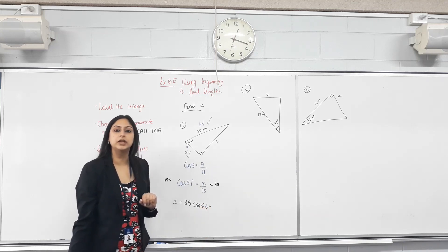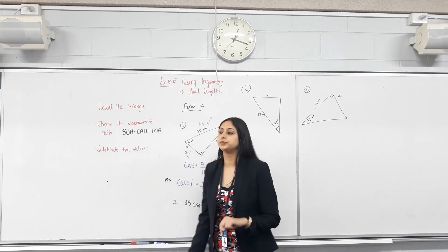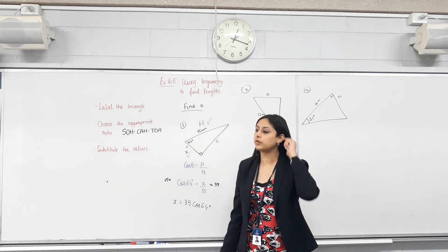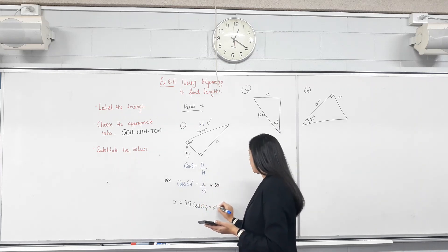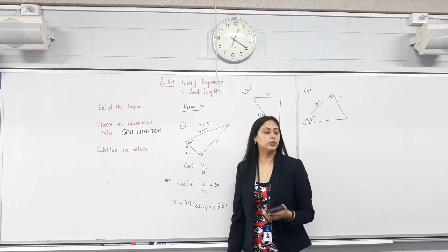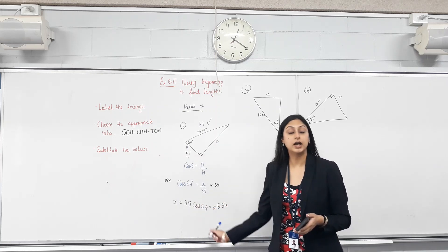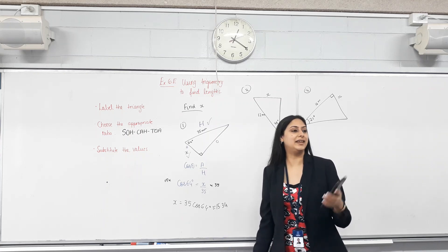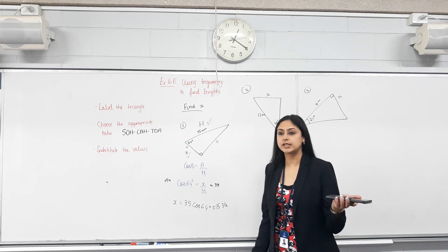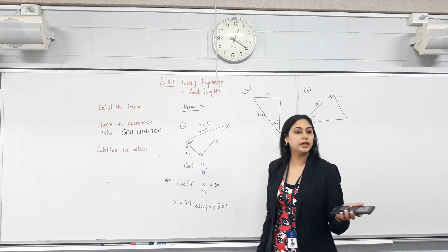In your calculators — tell me the answer to two decimal places. We got 15.343... so we round it to two decimal places. Something is missing from this answer though — the unit. What's the length we've calculated, and what's the unit of the length given to us?